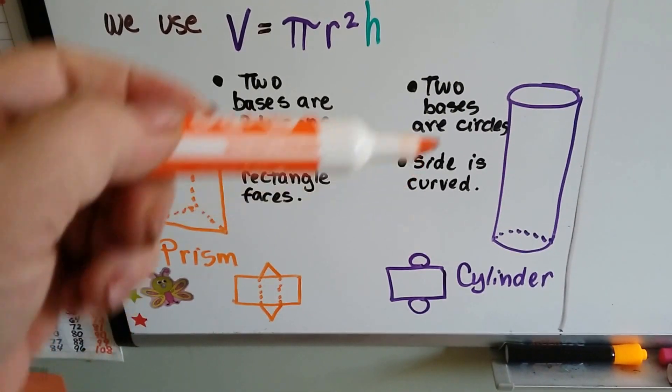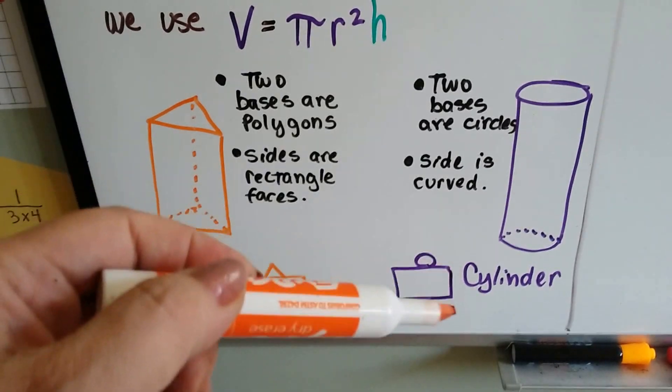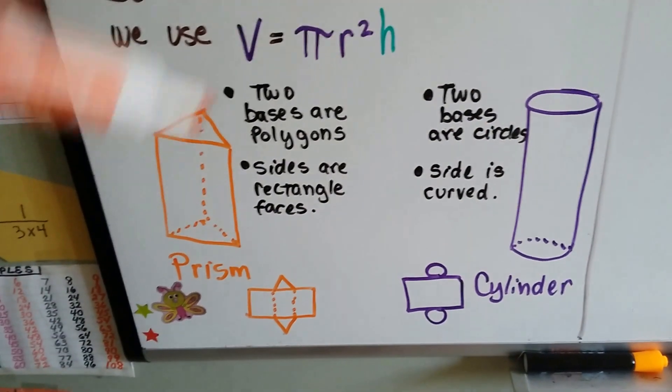And we do a cylinder. It's got a circle base and a circle base, and it's got a big, huge rectangle that curves around it. So that's the net for a cylinder.